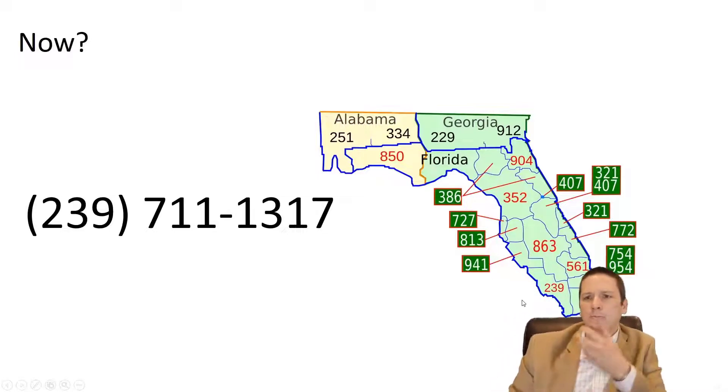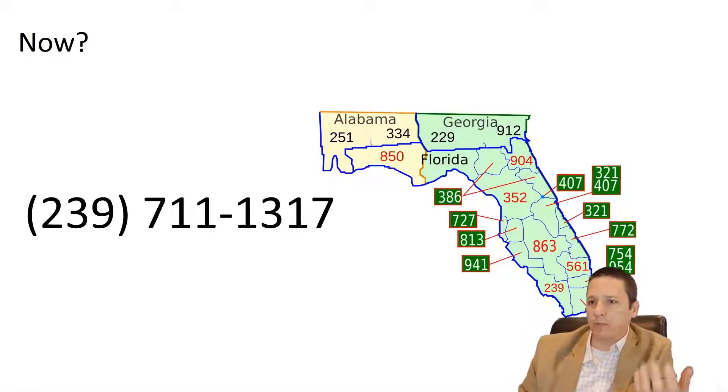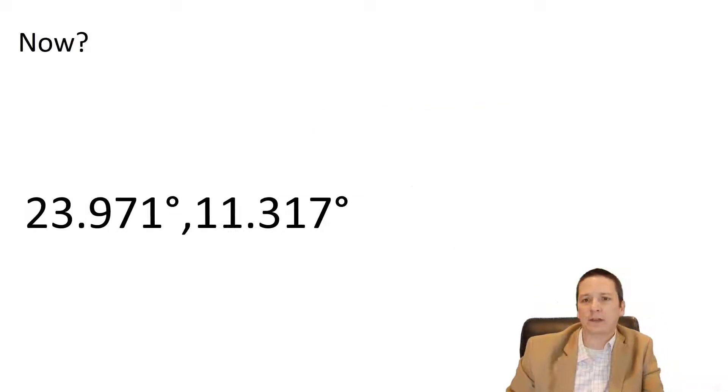But if we had taken this same exact number 239-711-1317 and we had formatted it like this, well okay, now we're not considering this a phone number. This is latitude and longitude, like GPS coordinates.